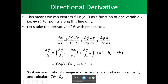As we continue with the directional derivative, this means we can express phi as phi(x,y,z) as a function of one variable. So whereas we had three different variables, now we're going to have one variable — we're just calling this s — to simplify things. We say phi(s) equals phi(x,y,z) for points along this line only.